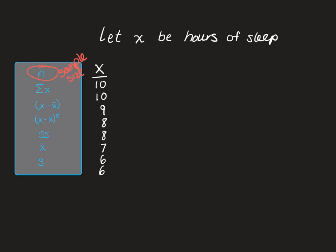n stands for the sample size. That means how many pieces of raw data we have. If we count our data, we have 1, 2, 3, 4, 5, 6, 7, 8 different scores for x, or 8 different hours of sleep that were reported. So because we have 8 pieces of data, our sample size equals 8, and thus n equals 8.